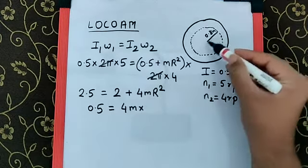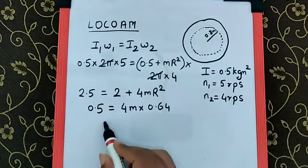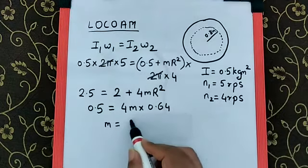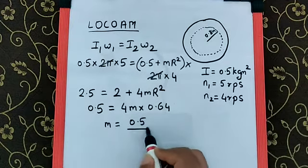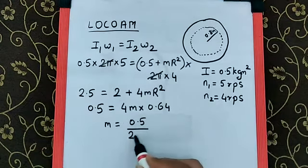the radius over here is 0.8 meter, the square of which will be 0.64. That means, the mass is going to be equal to 0.5 upon 0.64 into 4 is going to be 2.56.